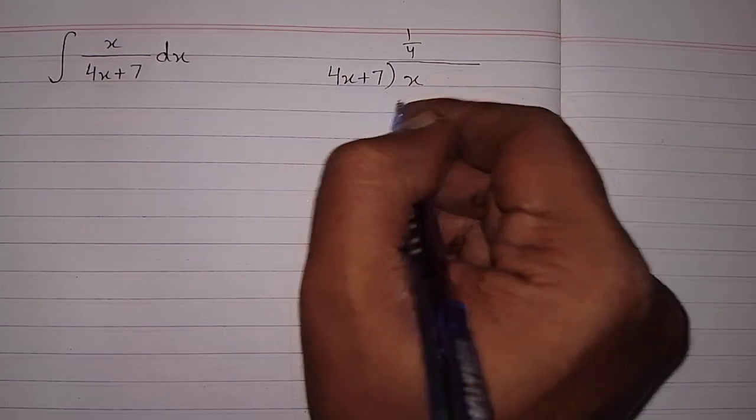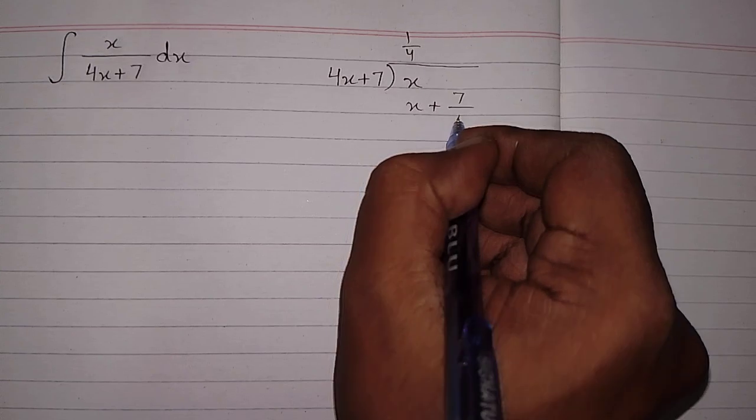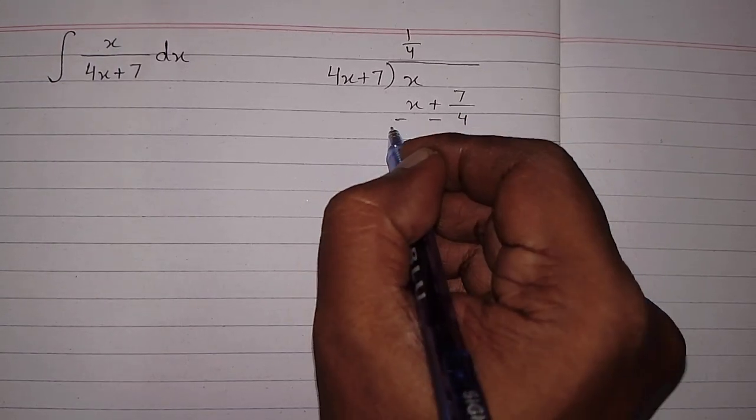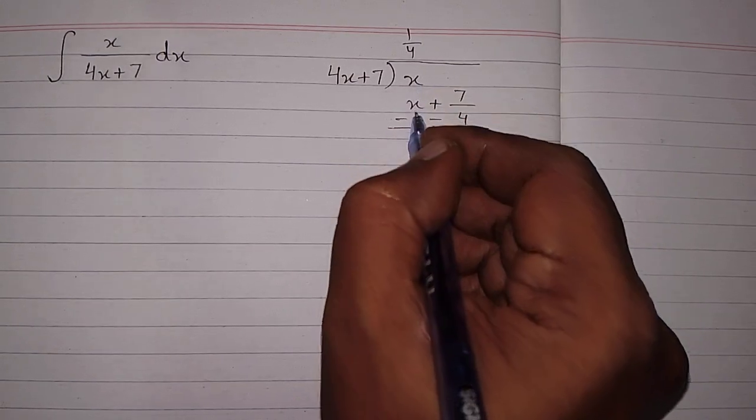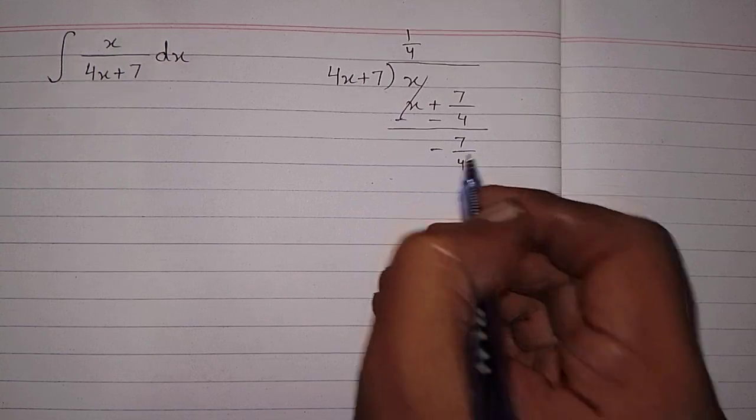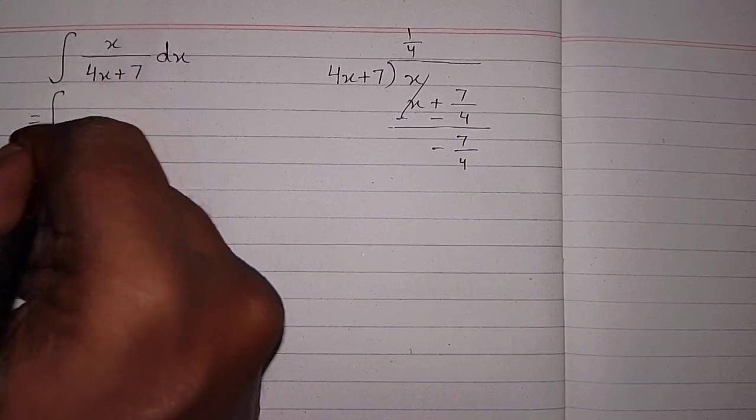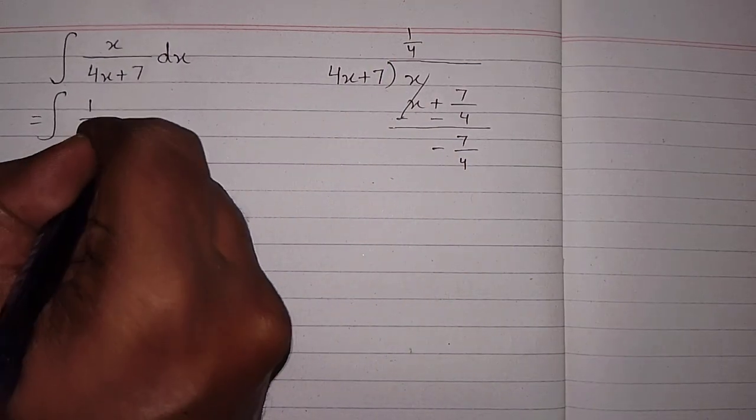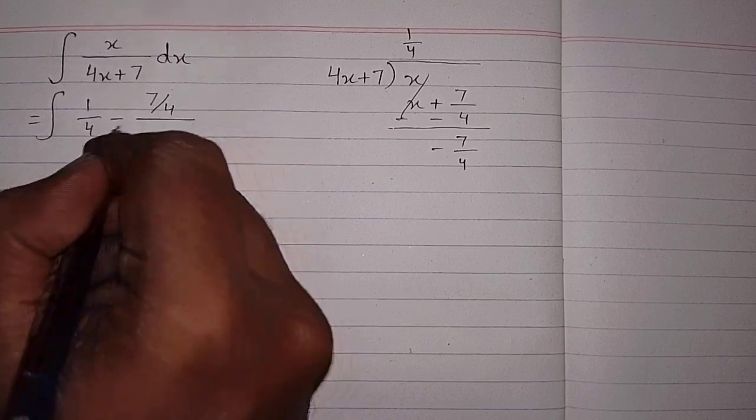1 upon 4 times 4x is x, and 1 upon 4 times 7 is 7 upon 4. Then we will change the signs of that expression, so x minus x is 0 and this will become minus 7 upon 4. So this fraction can be written as: first we will write 1 upon 4, then this minus 7 upon 4 in the numerator because this is our remainder, and then this divisor which is 4x plus 7.